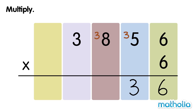Multiply the 100s. 6 times 8 hundreds equals 48 hundreds. 48 hundreds plus 3 hundreds equals 51 hundreds. Regroup 51 hundreds into 5 thousands and 1 hundred.